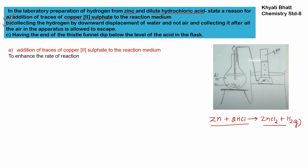The second point is collecting hydrogen gas by downward displacement of water. We have a water bath, and a gas jar placed into it — water is present in both, as seen in the figure. As hydrogen comes through the tube, it rises to the top and pushes the water downward, because hydrogen is lighter than water.